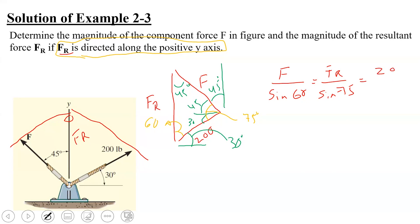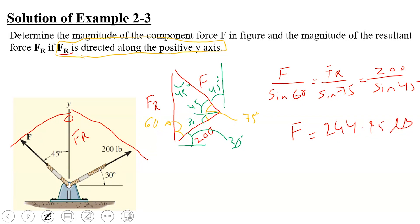Applying the sine law: FR over sine of 60 equals F over sine of 75 equals 200 over sine of 45. Solving this, the magnitude of F comes out to be 244.95 pounds, and the magnitude of FR comes out to be 273.21 pounds. We did not need to use the cosine law — the sine law was sufficient to solve this directly.